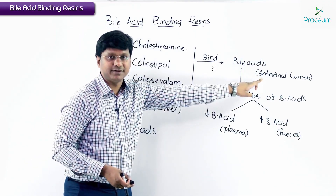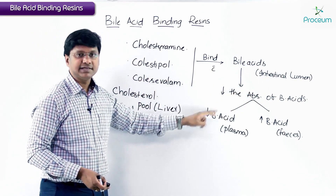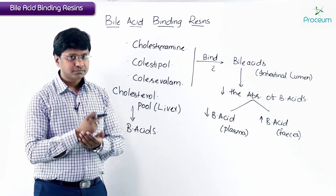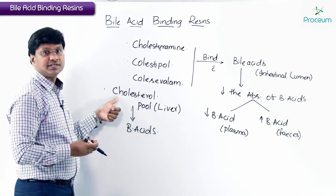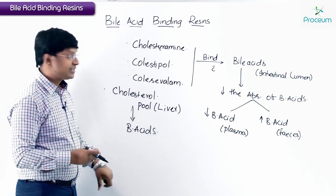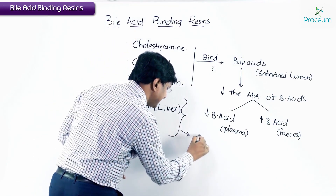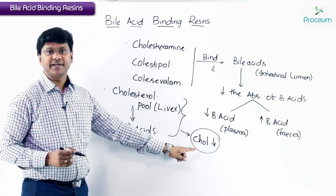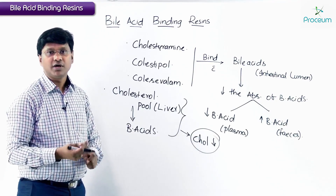The bile acids which have to be absorbed at the level of the intestinal lumen are not being absorbed because of these drugs. So the bile acid content in the plasma is reduced. Bile acids are very much required for our body's fat metabolism, so the cholesterol in the liver is completely converted into bile acids. The resultant effect is the cholesterol content in the liver is reduced.